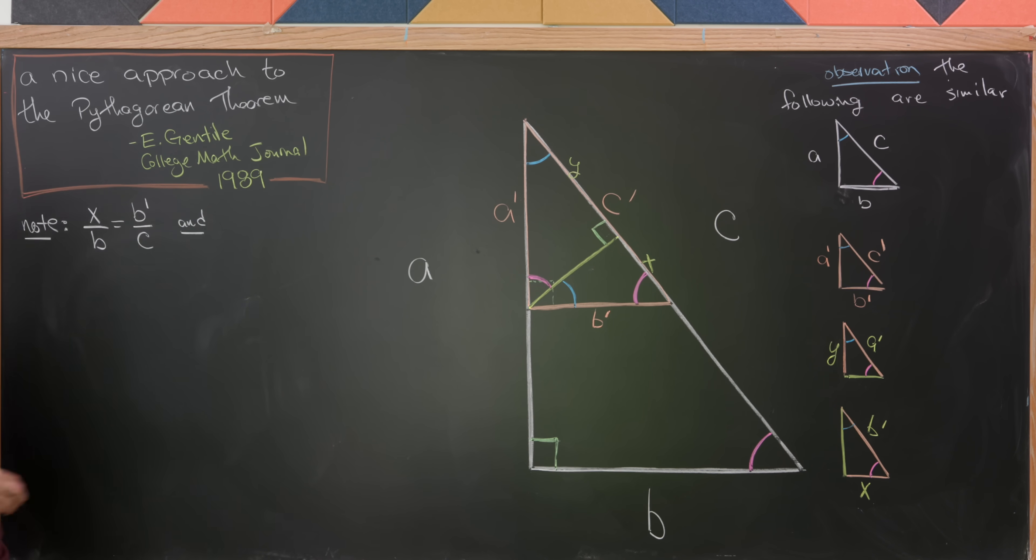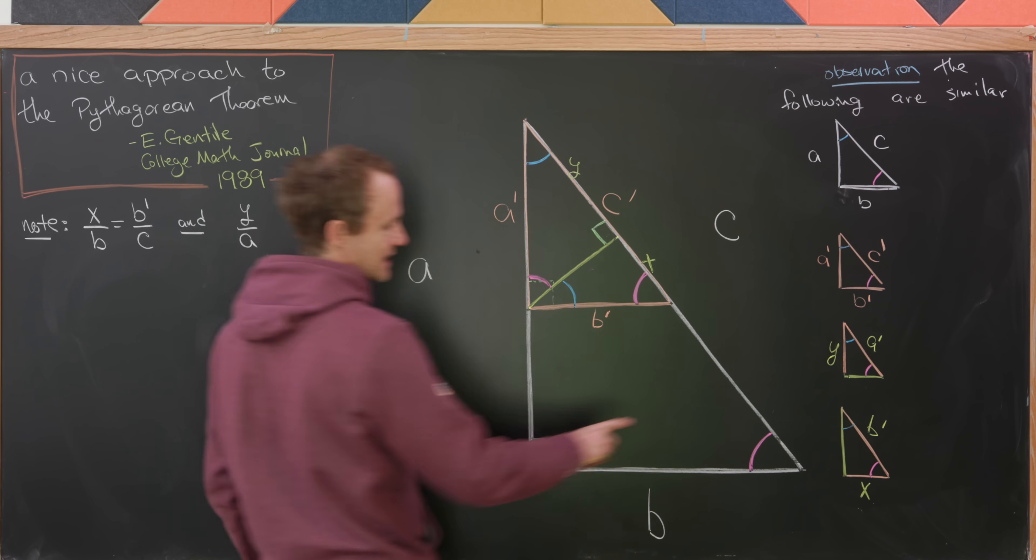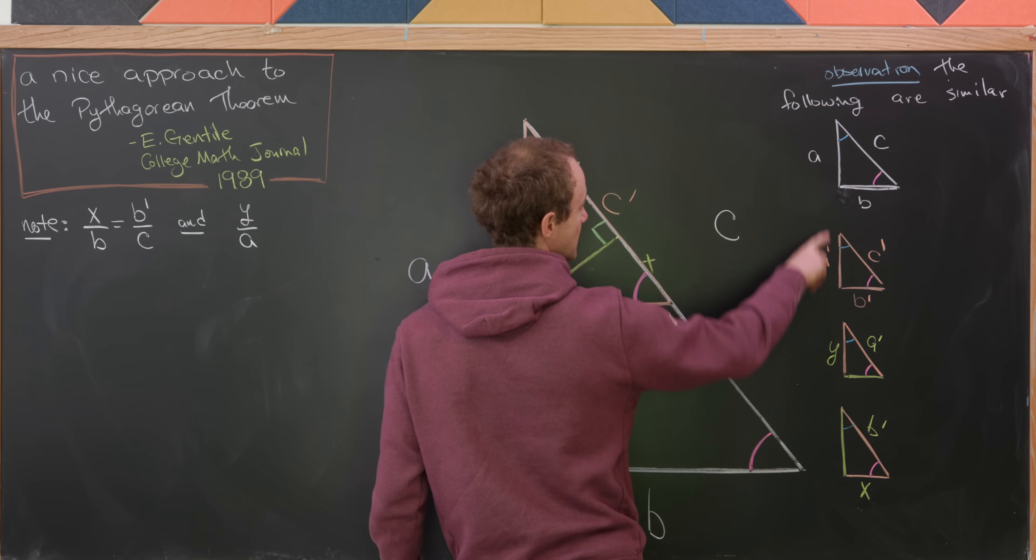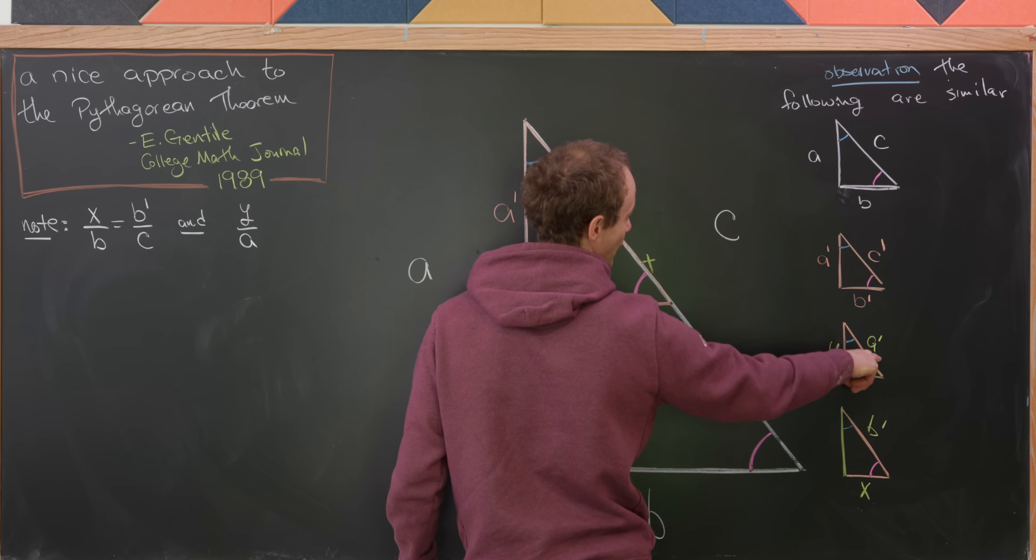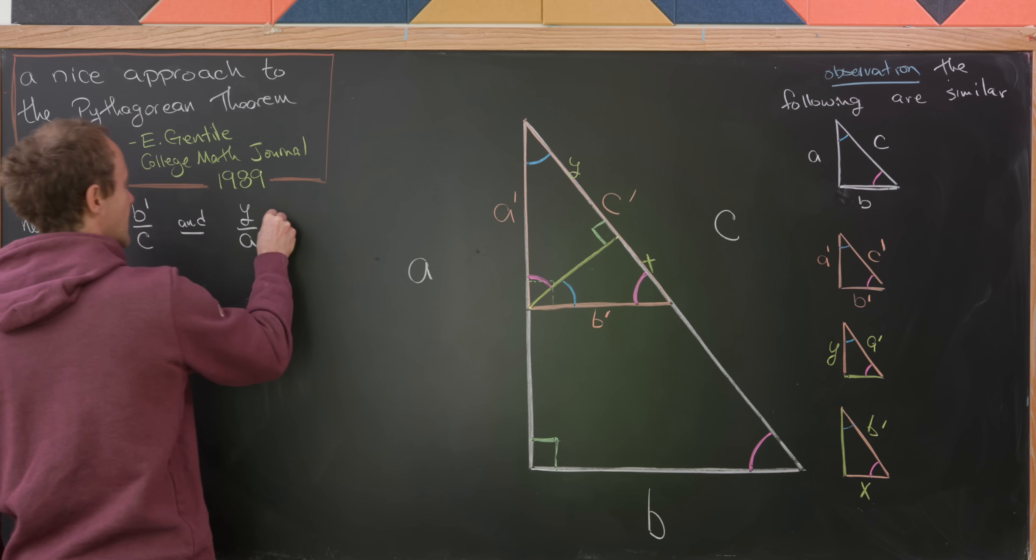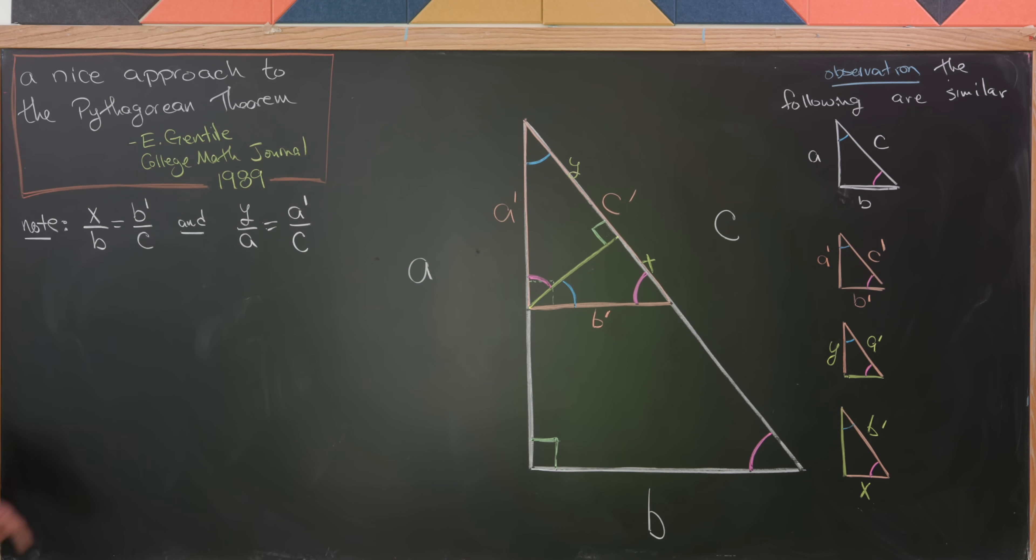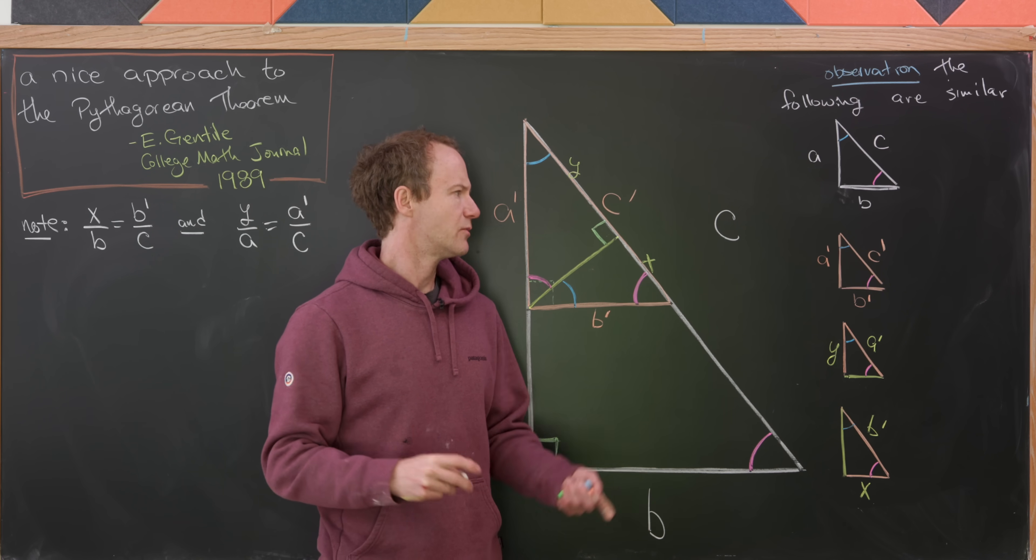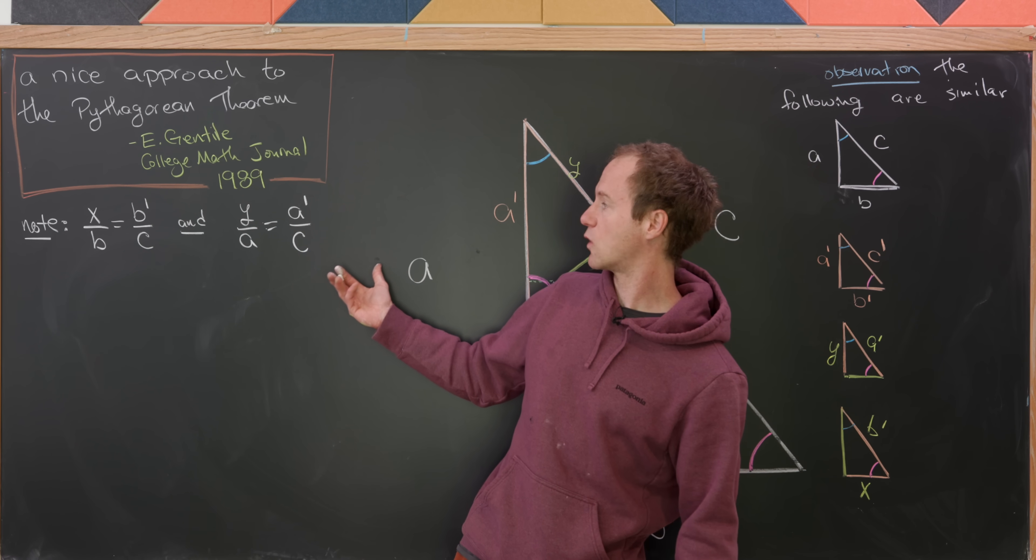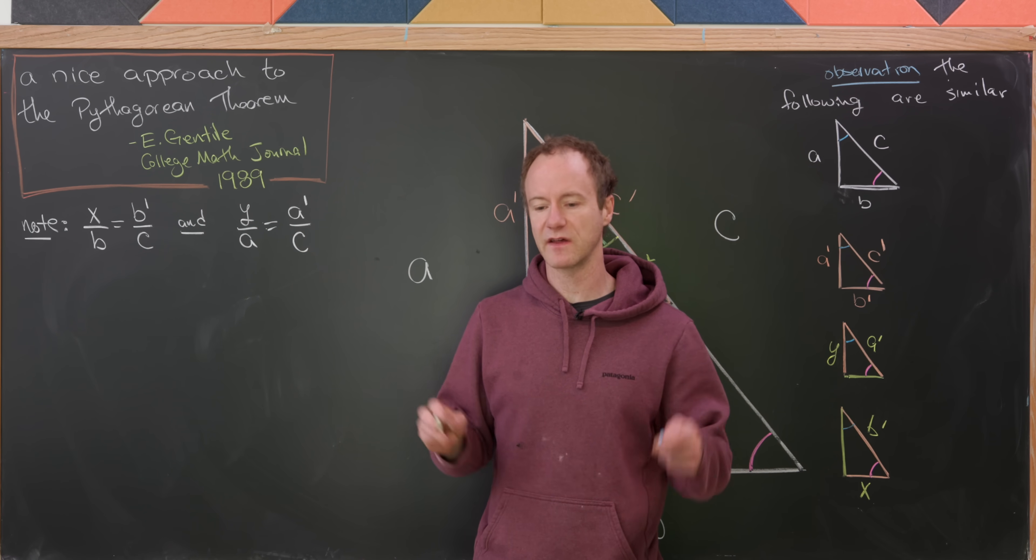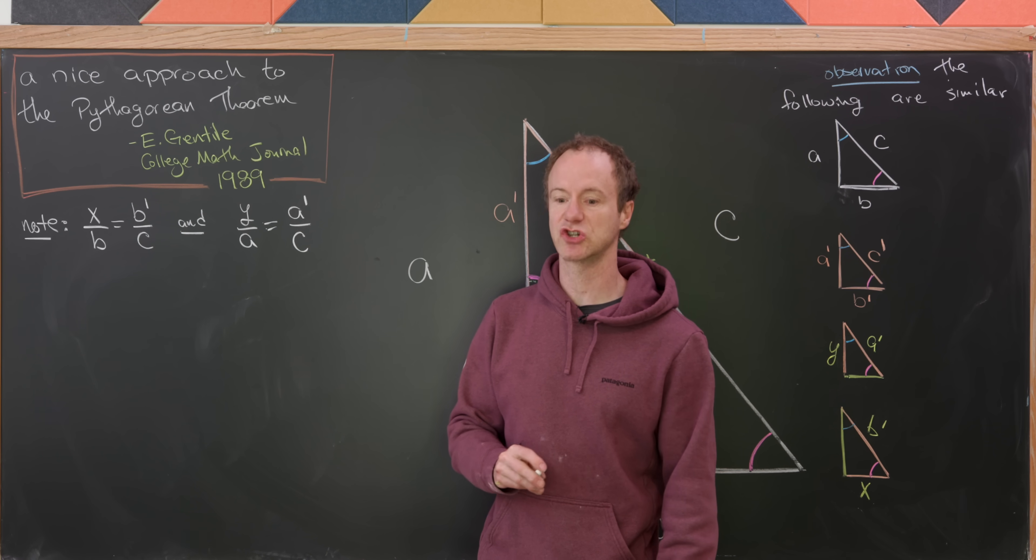Let's also notice that if we take y over a, that's the kind of left-hand side of this triangle divided by the left-hand side of this triangle. So that's going to be the same thing as a prime over c. And what's nice about putting all of these triangles in the orientation like we have over here is it's pretty simple to produce these equalities of proportions of side lengths based off of the similarity of the triangles.